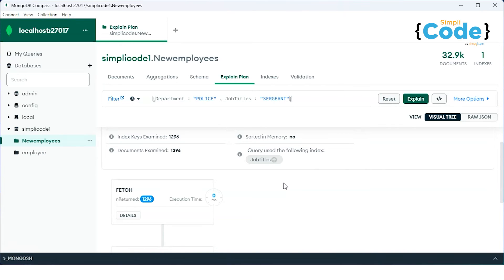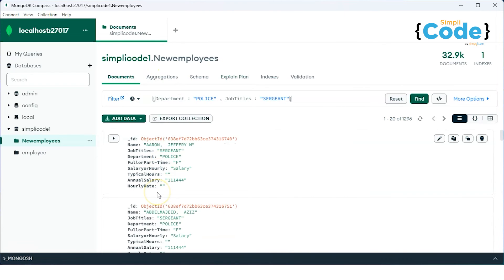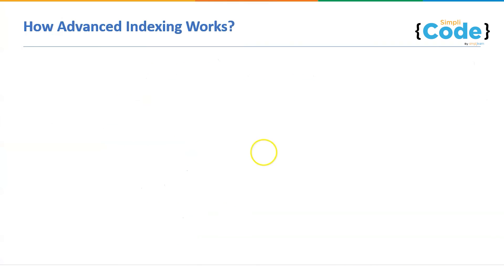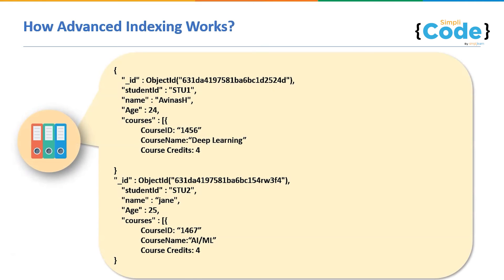Index basically provides the user the ability to efficiently navigate through the data required instead of searching the whole dataset. Now you might be wondering why we need an advanced technique. If I have sub-array fields in documents, I need to query those documents quickly. It will take more time than a single field or compound field. That is where we use advanced indexing — to index sub-array fields or sub-documents.